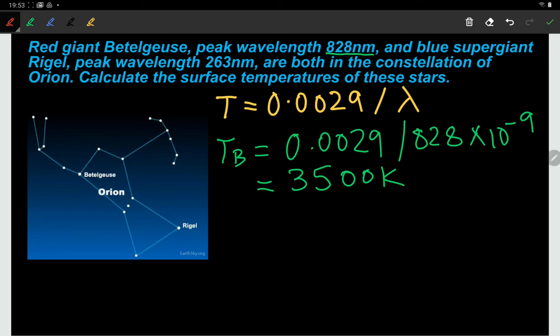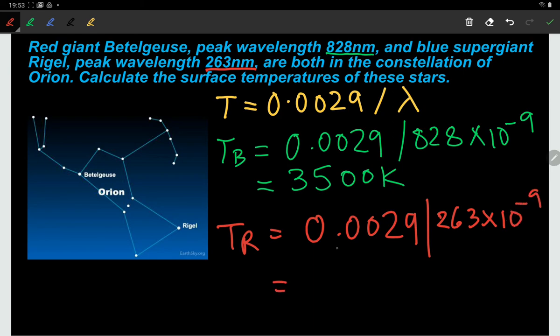Let's do the second star. So we've got Rigel, wavelength is here, 263 nanometers. Temperature of Rigel - very nice formula to use, nothing complicated. 2.63 times 10 to the minus 7, or 263 times 10 to the minus 9 meters. You put that temperature in and you get 11,000 Kelvin.